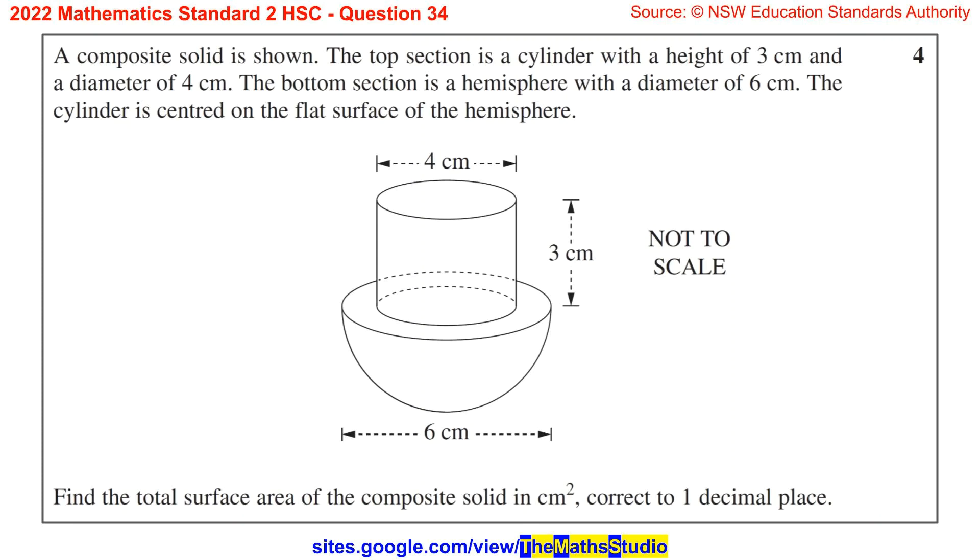Question 34: A composite solid is shown. The top section is a cylinder with a height of 3 cm and a diameter of 4 cm. The bottom section is a hemisphere with a diameter of 6 cm. The cylinder is centered on the flat surface of the hemisphere. Find the total surface area of the composite solid in square cm, correct to 1 decimal place.